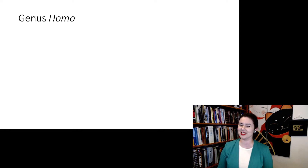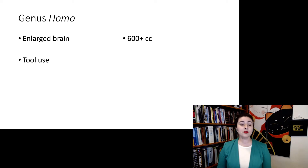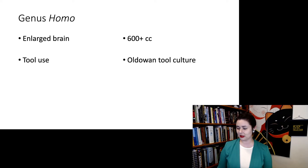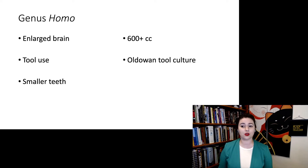This is kind of a big debate. The criteria that people generally use to put something in the genus Homo is a slightly larger brain, usually of at least 600 cubic centimeters. Also tool use — specifically the Oldowan tool culture, though recent finds are pushing back stone tool culture, so we can't really use this one anymore. We're also generally seeing smaller teeth, especially smaller molars. So even though Australopithecus didn't have quite as big teeth as Paranthropus, we are seeing smaller teeth in genus Homo in general. And we're also seeing more advanced bipedality.